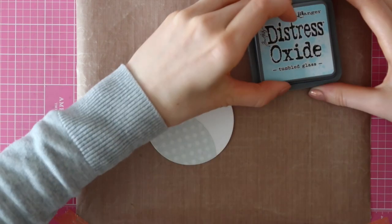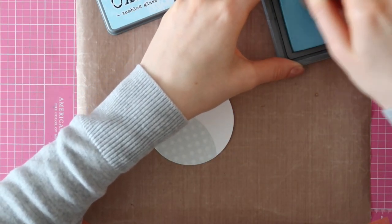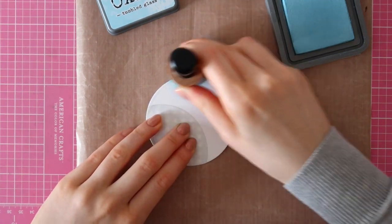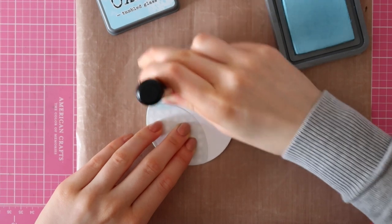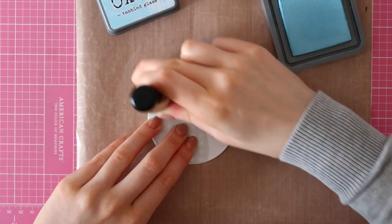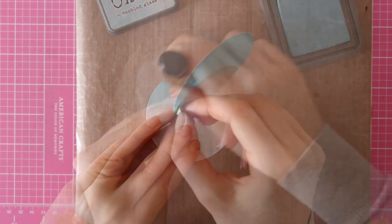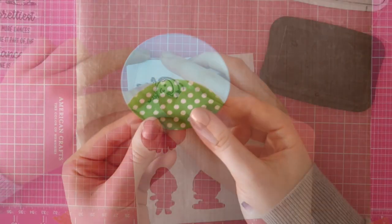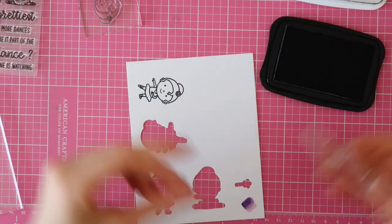For the sky, I'll be using Tumble Glass Distress Oxide ink and I'm just applying this with a mini ink blending tool from Ranger and Tim Holtz. You could also use a darker shade of blue. You could add that on the top of the piece of cardstock just to create a little bit of an ombre look.